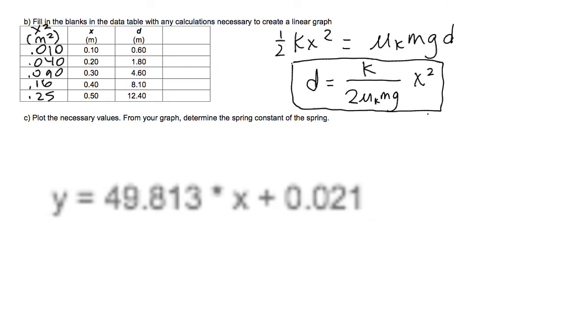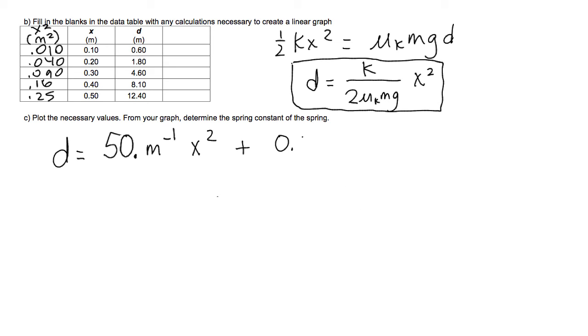So when I rewrite the experimental relationship, I need to use the actual quantities being graphed, which in this case gives us d equals 50 is the slope to two sig figs. And that is in meters to the negative one. And then it's times x squared plus this very, very small intercept, 0.021. And that is in meters.